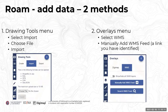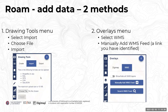Roam also allows you to add in your own data. Within the drawing tools menu, there is an import tab that allows you to import files in formats such as shapefiles, KML (from Google Earth), GPX — so you could add GPS tracks from GPX apps — simple spreadsheets as CSV files, and GeoJSON files. The maximum upload size for those is 10 megabytes.